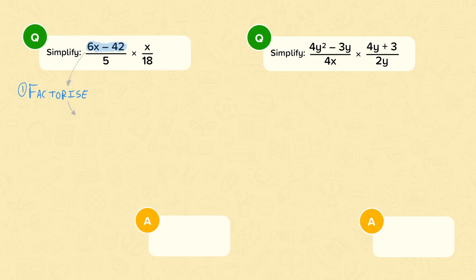So, I'm going to take 6 out as a factor. So, that gives me 6 brackets x minus 7 over 5 times x over 18. The reason we want to factorise is now cancelling common factors becomes much easier. Let's look at this 6 and this 18. I can divide both by 6. So, this 6 cancels. The 18 becomes 3.